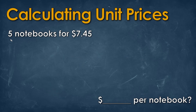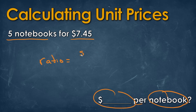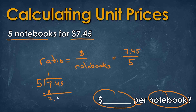Now let's look at this example. We have five notebooks for every $7.45, and our answer is asking for dollars per notebook. So our ratio is dollars per notebook. We're actually seeing it backwards — we don't put five notebooks on top. We actually want to start with $7.45 over five notebooks. If we do the division, we get $1.49 per notebook.